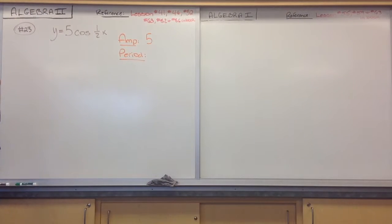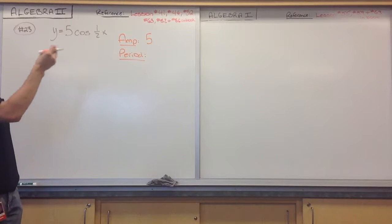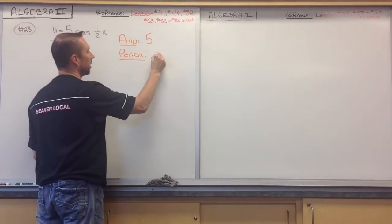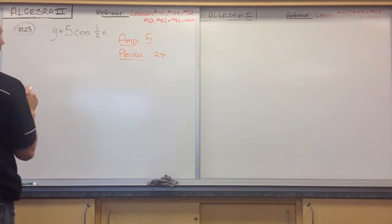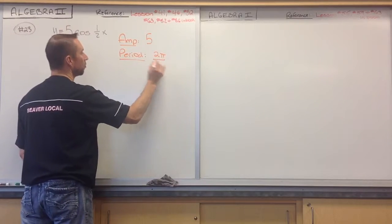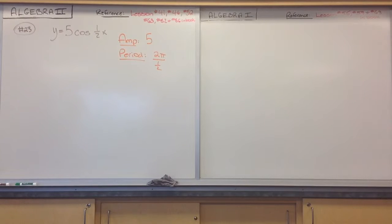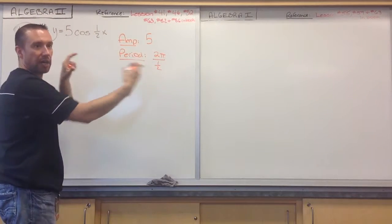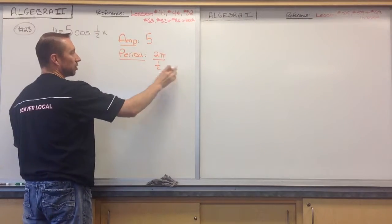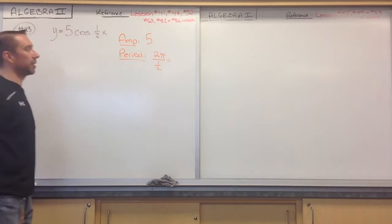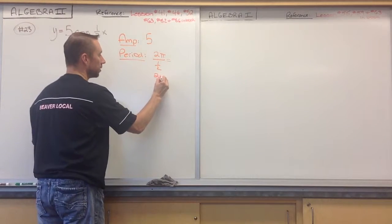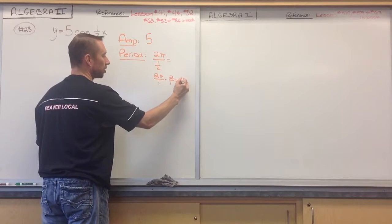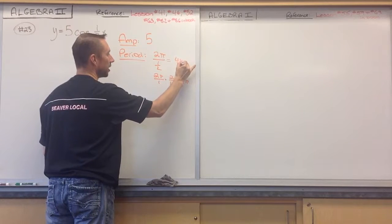What will the period be of this particular function? We take 2 pi divided by the coefficient. In a normal cosine function, one cycle is 2 pi, so we use that as the base. We divide by 1 half, which is the coefficient of x — that changes the horizontal movement. So 2 pi over 1 half, which is 2 pi times 2 over 1, gives me 4 pi. So my period is 4 pi.